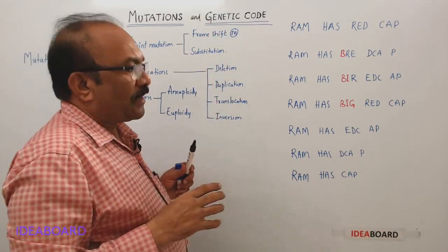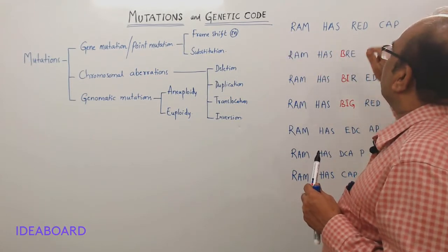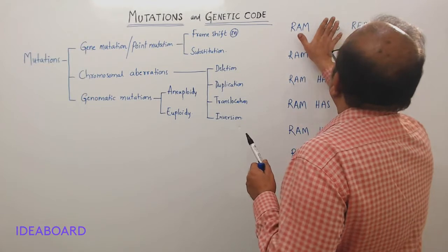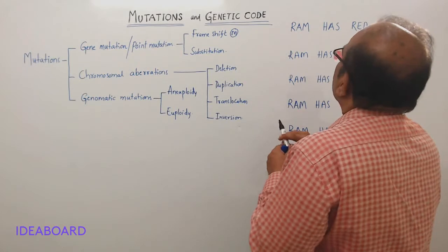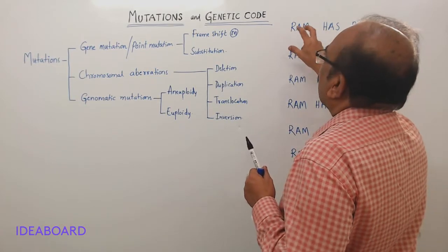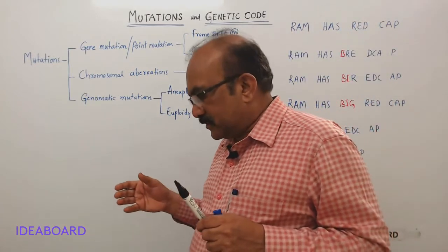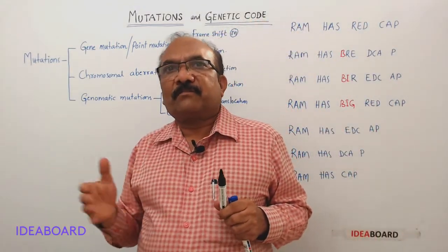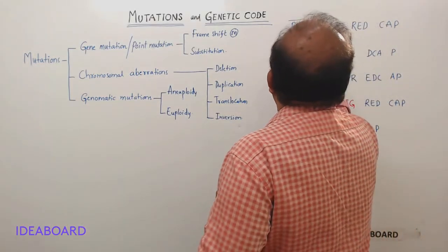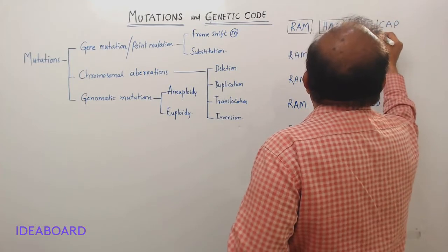For better understanding, I have taken the sentence: 'ROM HAS RED CAP.' You can see I wrote it with spaces and gaps, and each word has three letters. This corresponds to the genetic code, which is also composed of three letters — the codon is a triplet codon. So we label each word as the first, second, third, and fourth codon.